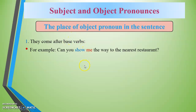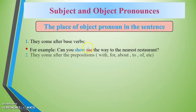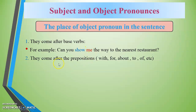The object pronoun comes where the subject pronoun would be replaced. For example: 'Can you show me the way to the nearest restaurant?' Here 'show' is the base verb, and 'me' is the object pronoun. They also come after prepositions such as with, for, about, to, of, etc.